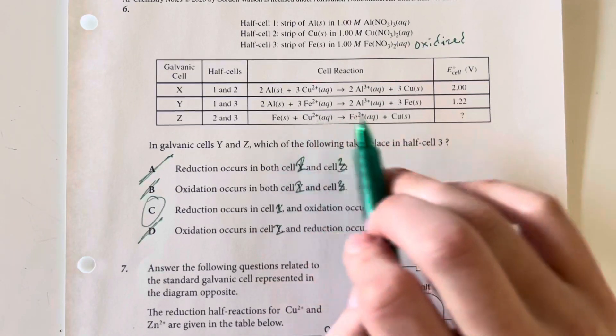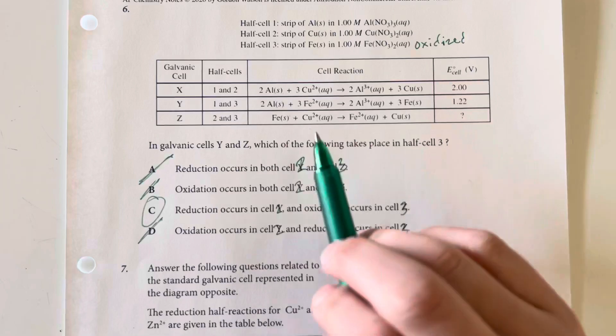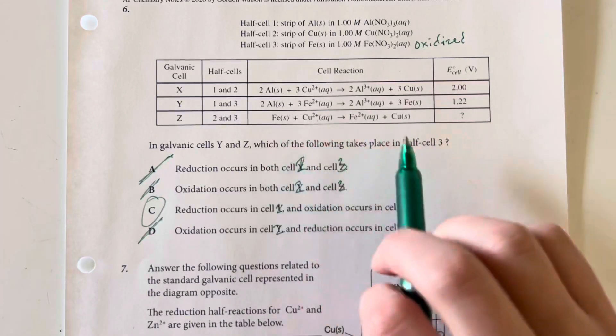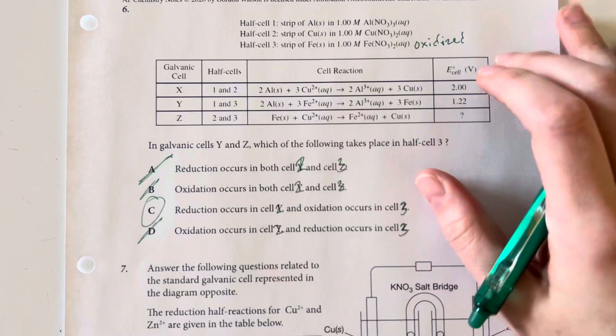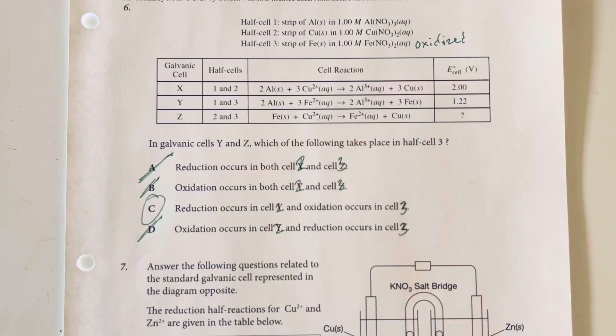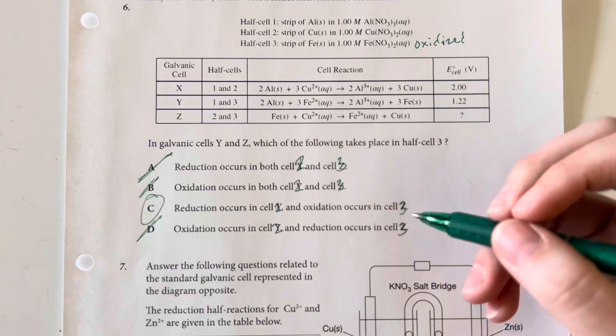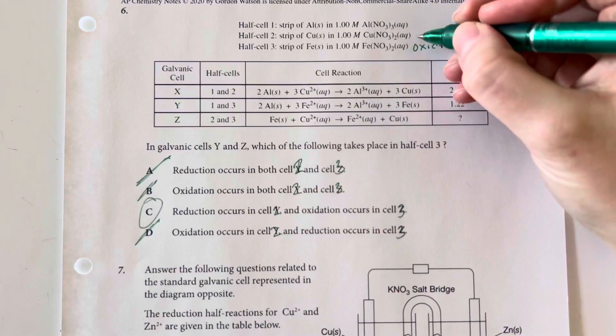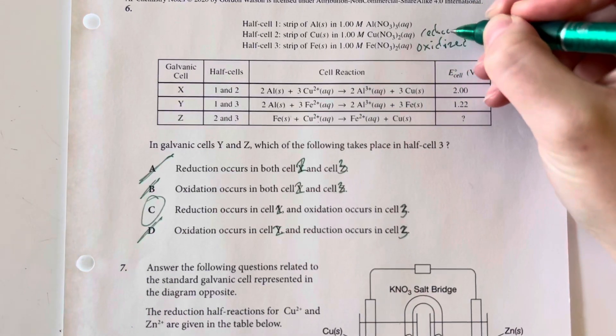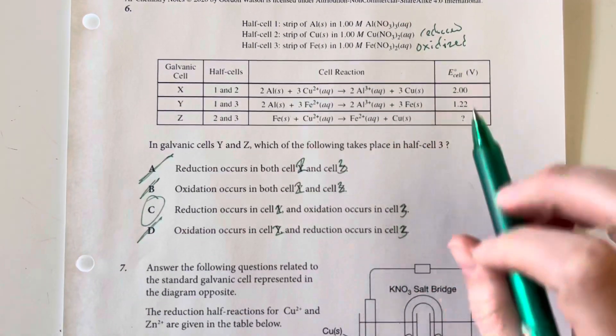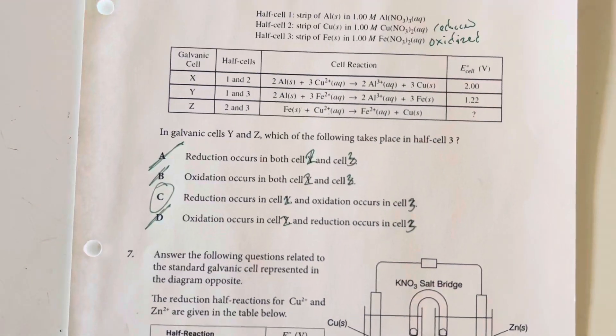You can also see that copper is reducing its charge, going from +2 to 0, so it's being reduced. Cell 2 is being reduced and cell 3 is being oxidized. So answer choice C.